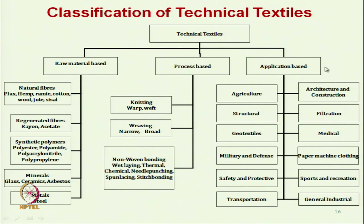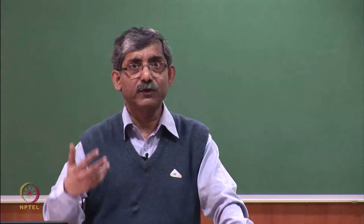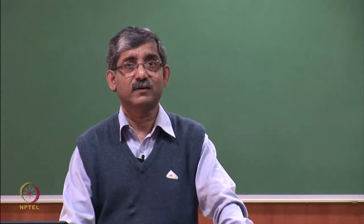As far as applications are concerned, technical textiles are classified in different areas: agricultural application, structural application, geotextile, military and defense, safety and protective, transportation, architectural construction, filtration, medical application, paper making and machine clothing, sports and recreation, and general industrial applications like conveyor belts. These are a few areas; apart from these there are many more areas of application.